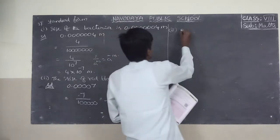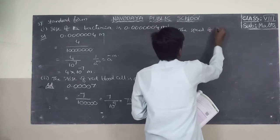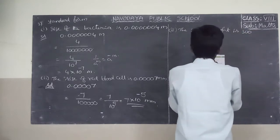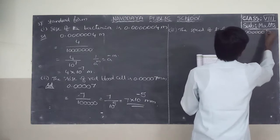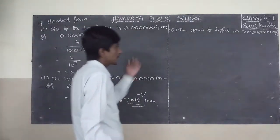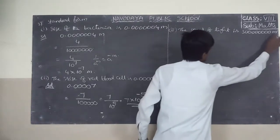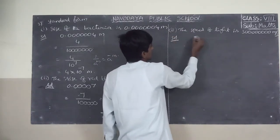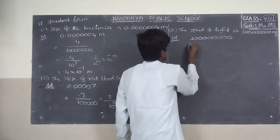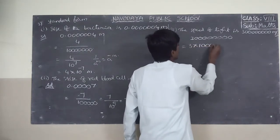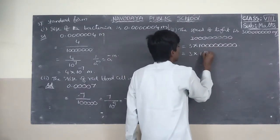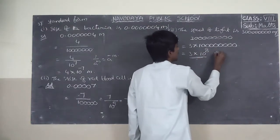Third one: the speed of light is 300,000,000 metres per second. So here 3 followed by 8 zeros. This can be written as 3 into 10 to the power of 8 metres per second.